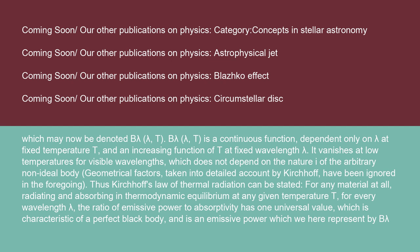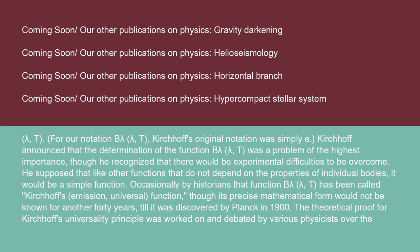Thus Kirchhoff's law of thermal radiation can be stated: for any material at all, radiating and absorbing in thermodynamic equilibrium at any given temperature T, for every wavelength λ, the ratio of emissive power to absorptivity has one universal value, which is characteristic of a perfect black body — an emissive power represented here by B(λ,T). Kirchhoff's original notation was simply E. Kirchhoff announced that the determination of the function B(λ,T) was a problem of the highest importance, though he recognized there would be experimental difficulties. Occasionally by historians, this function has been called Kirchhoff's emission universal function, though its precise mathematical form would not be known for another 40 years, until it was discovered by Planck in 1900.